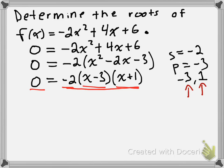Now obviously, we can't make the -2 equal to 0. That's not possible. So what we're going to do is assume that these two factors are equal to 0. Let's do that.